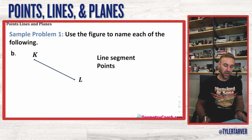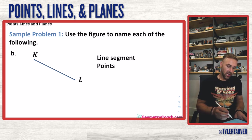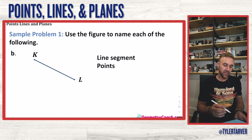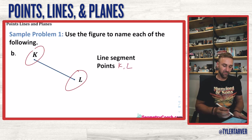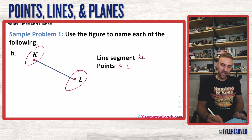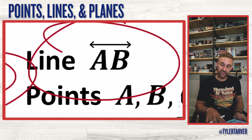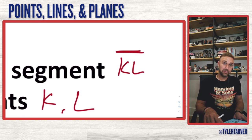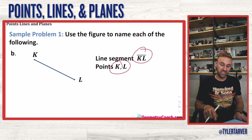Sample problem one: use a figure to name the line segment and the points. I've got K and L, so I can put points K and L. For the line segment, these points don't go on forever since there's no arrow, so I write KL with just a straight line over it — no arrows — because it's a segment. We got both of those correct.